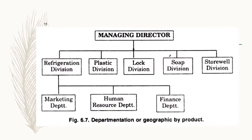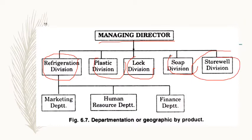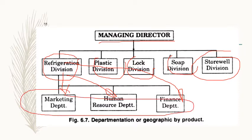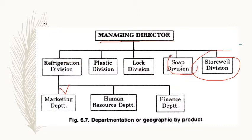This is how it appears: under the managing director at the top, there are departments like refrigeration, plastic division, lock division, soap division, and store well division — all unrelated products. Under each product there could be marketing, human resources, and finance. This is predominantly departmentation by product, with departmentation by functions possible under each product line.